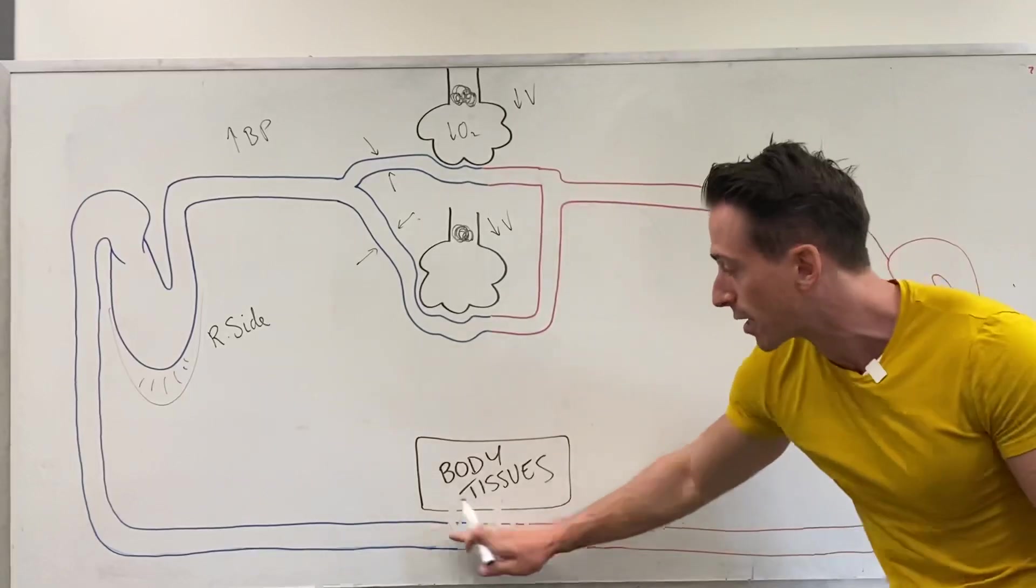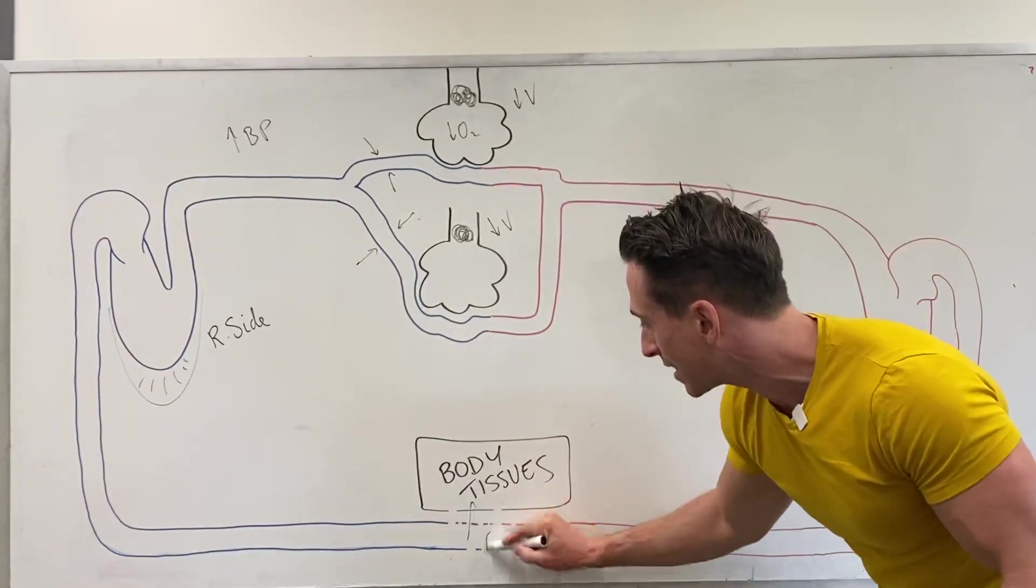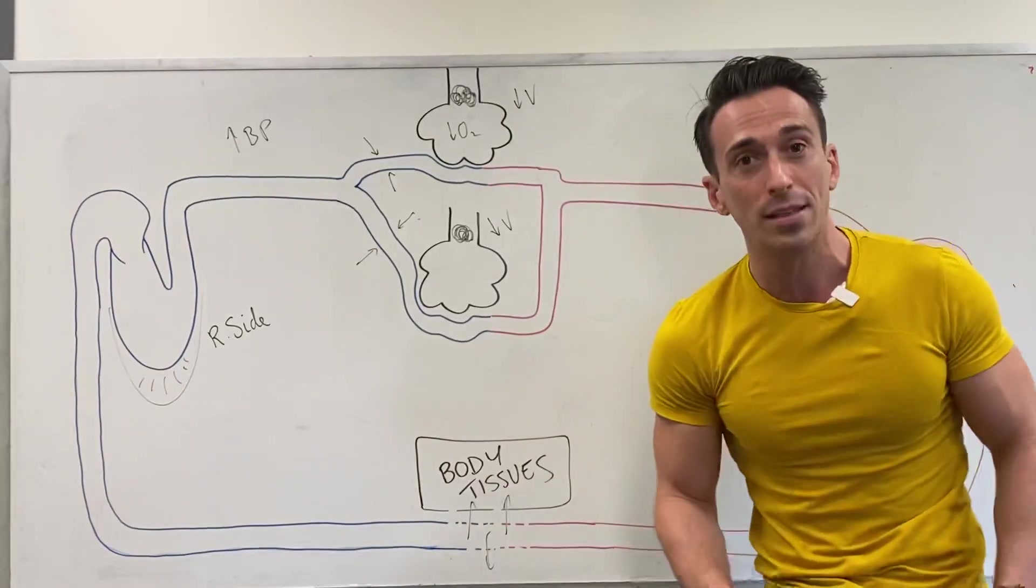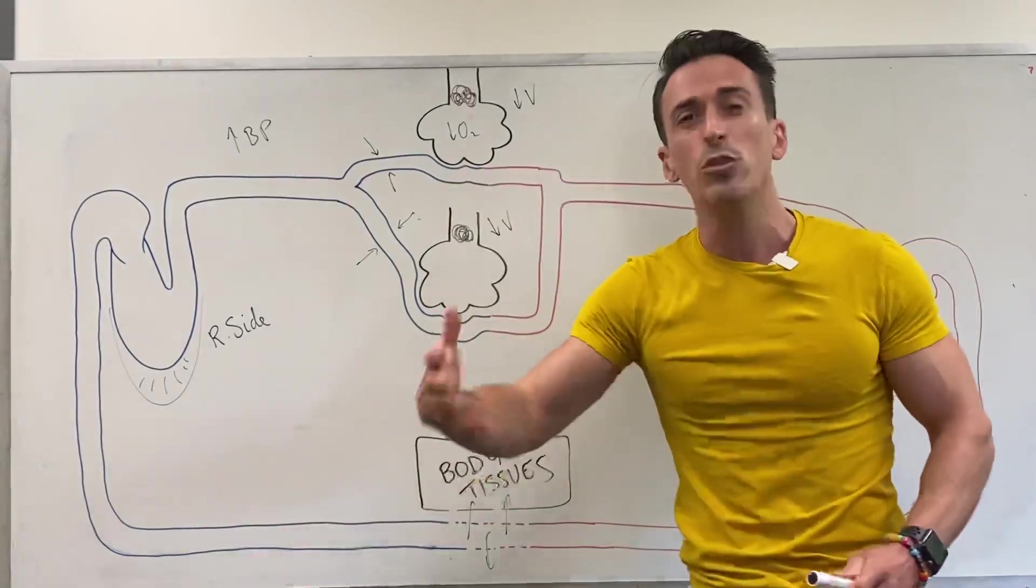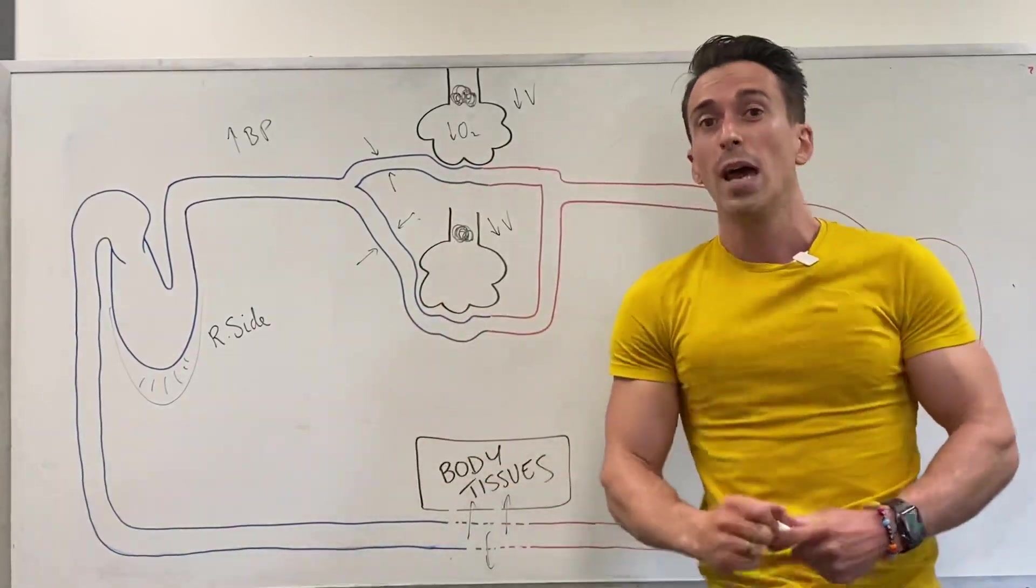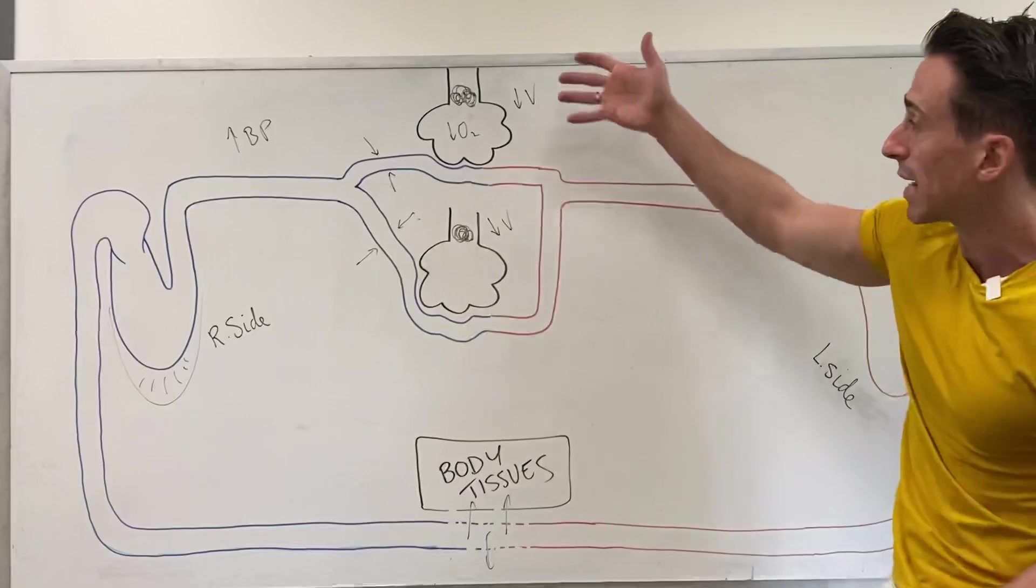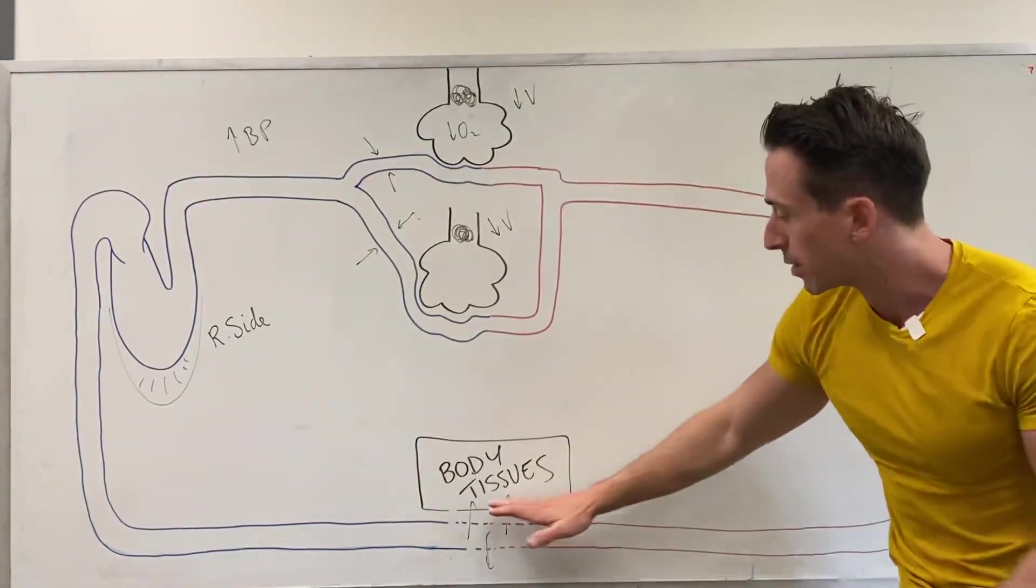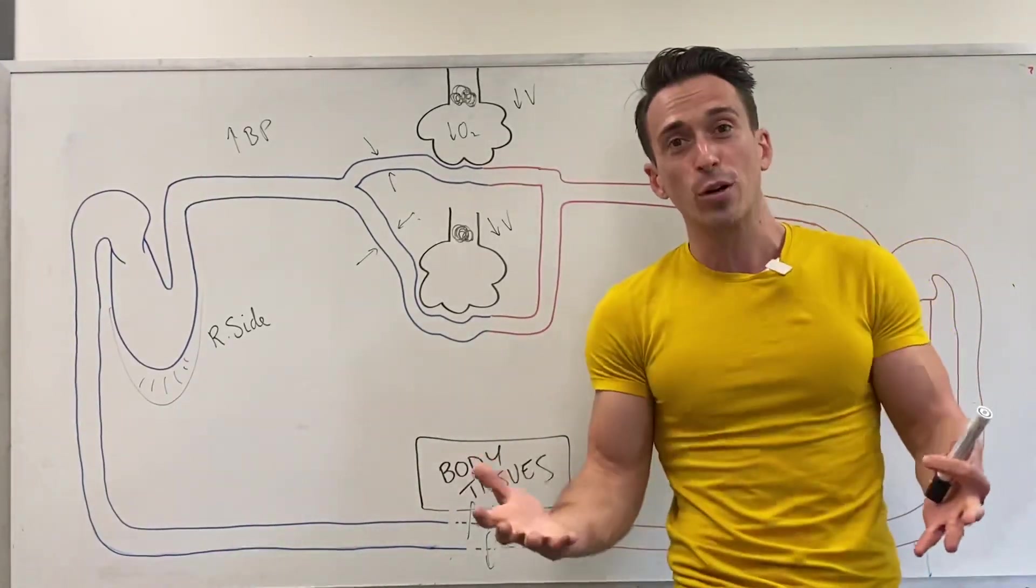The blood pressure is so high that at the capillaries of the tissues, blood leaks out and you get peripheral edema. Now back in the past, they used to unfairly refer to these people as blue bloaters—blue because there's lack of oxygen and bloating because of the peripheral edema. That's chronic bronchitis.